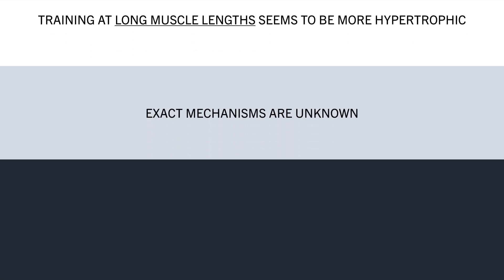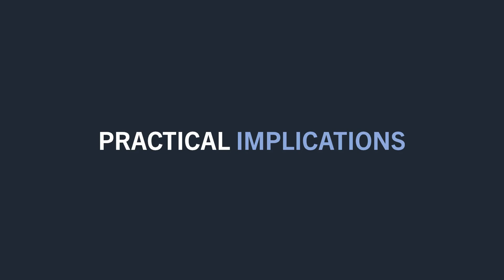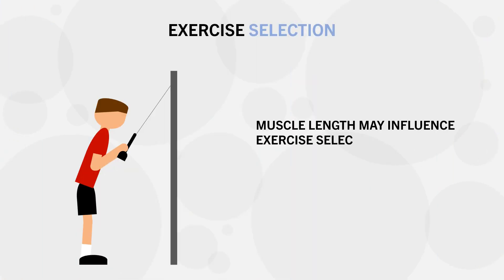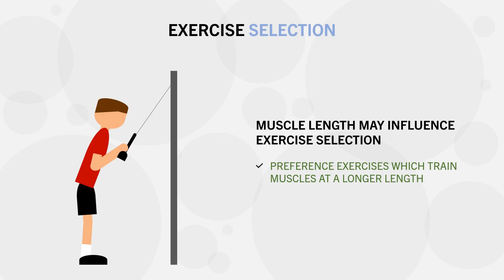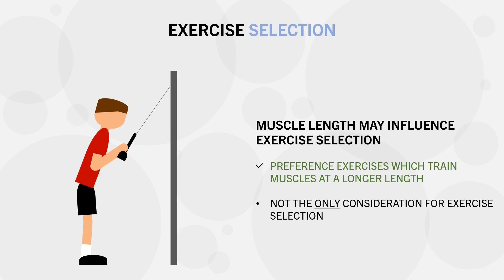This is all well and good in theory, but what does this actually mean for trainees in the gym? Well, this has two practical implications that we can apply to our own training to maximise muscle growth. The first implication is for exercise selection. There are multiple different exercises which can all train the same muscles, but not all exercises may induce the same hypertrophic stimulus for each muscle. One way that we can make better exercise decisions is by considering muscle length — if an exercise trains a muscle at a longer length, it should probably be preferred over an exercise which trains the muscle at a shorter length. If two exercises are similar but one trains the muscle at a longer length, then it may be a better option to implement.